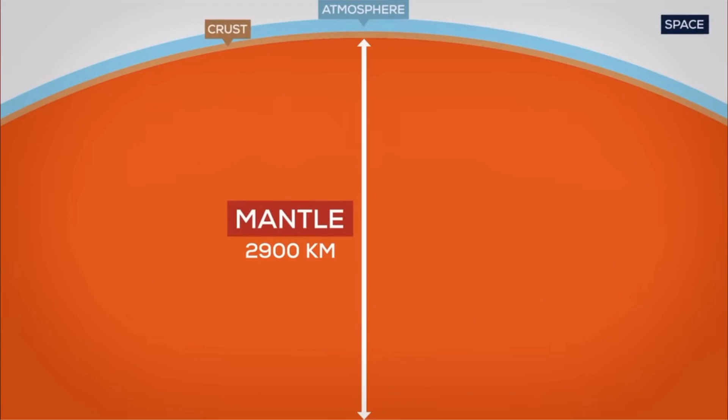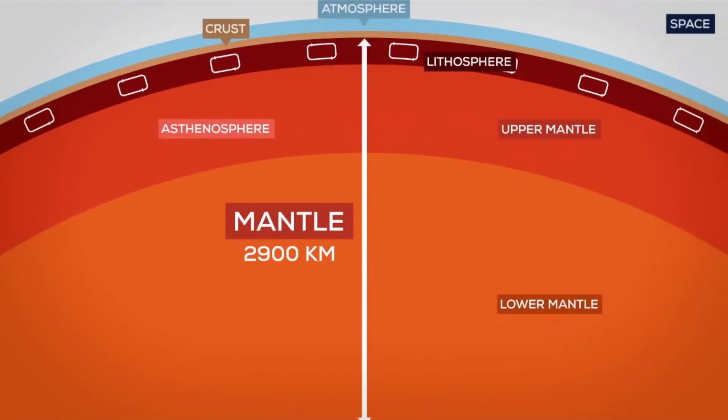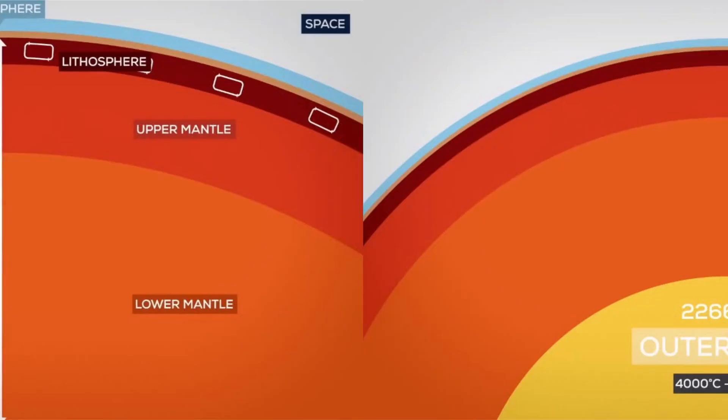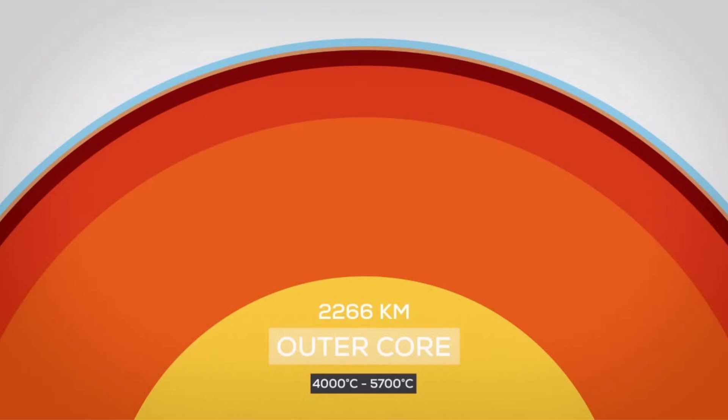By the way, the deepest hole ever drilled by man is 12,262 kilometers deep. After the crust comes the mantle — a silicate rocky shell about 2,900 kilometers thick. The mantle consists of the upper mantle and the lower mantle. The upper mantle has different regions too; its upper part, which is viscous and carries the crust, is called the lithosphere. After that comes the asthenosphere, which consists of less mobile, mostly solid material. The lower mantle reaches deep down to the outer core of Earth.